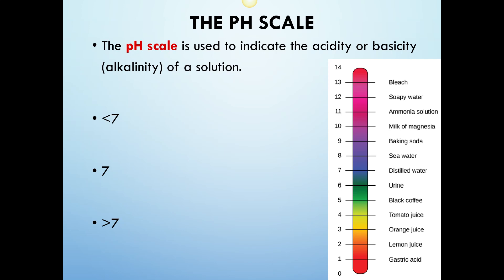The pH scale is used to indicate the acidity or basicity, also known as alkalinity, of a solution. Right here at seven, seven is neutral. Anything less than seven is an acid, and anything greater than seven is a base. Here's some examples: a variety of different acids, then you have distilled water which is completely neutral, and then you have a variety of bases.